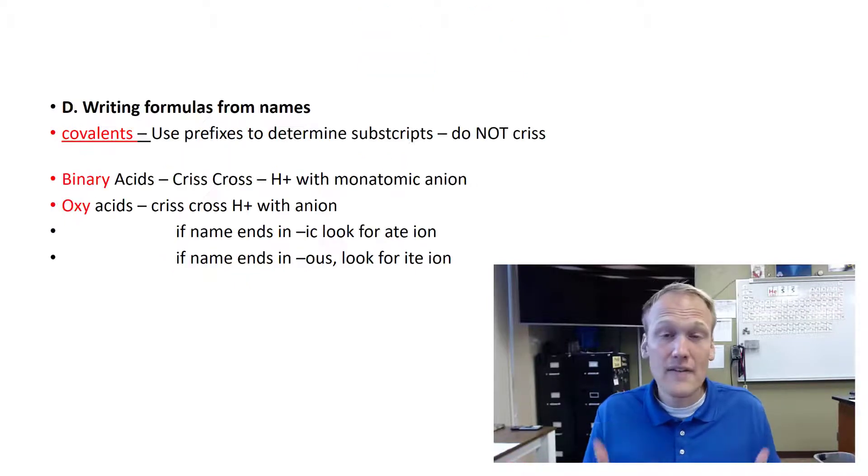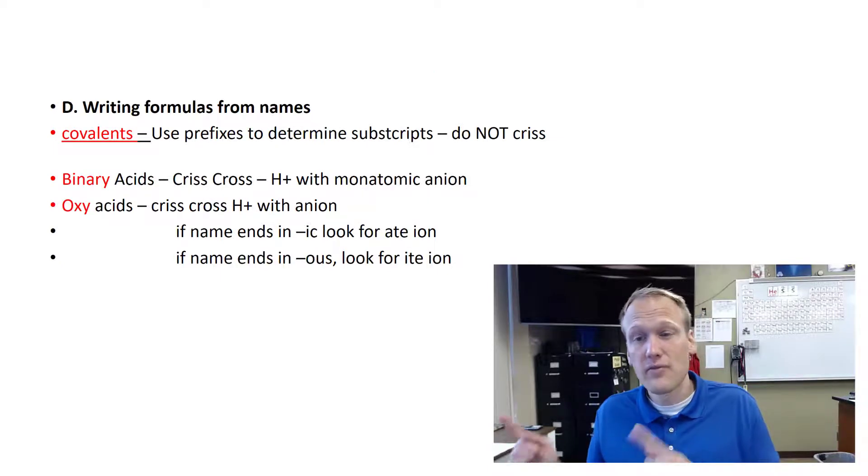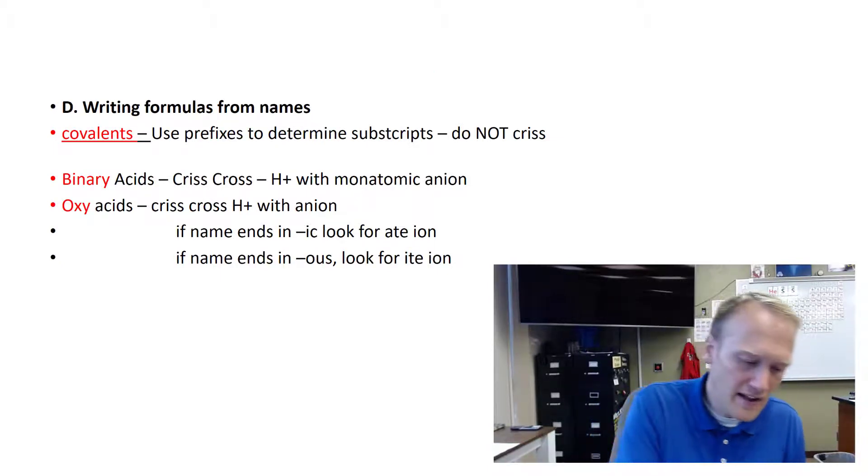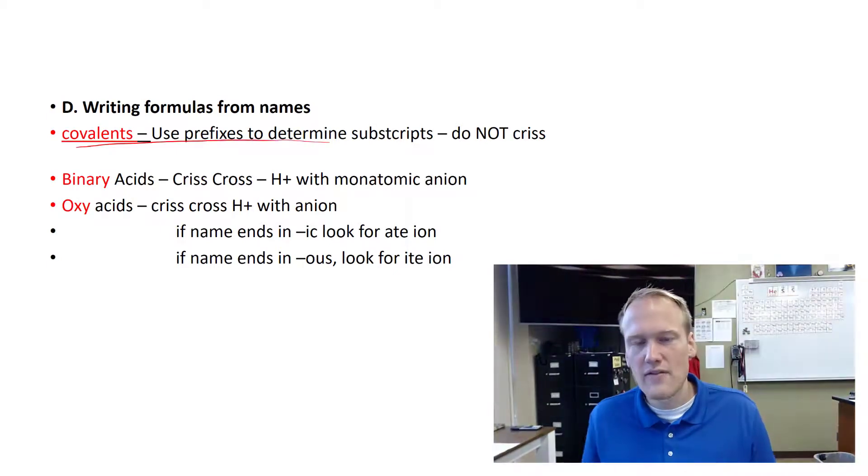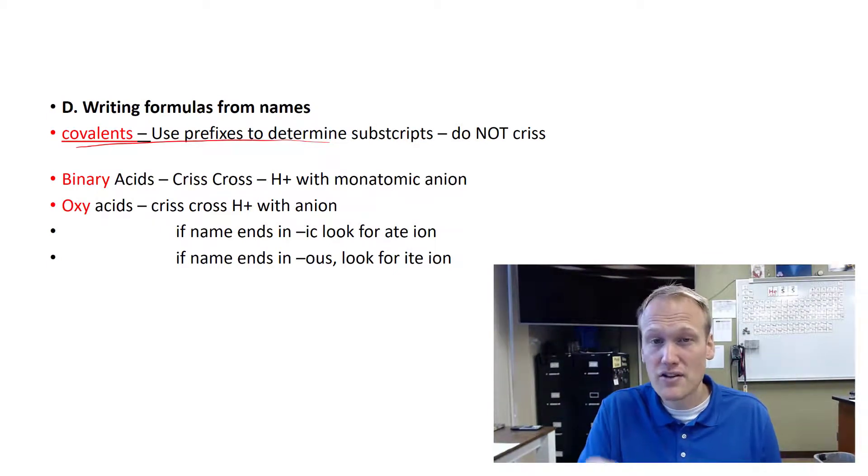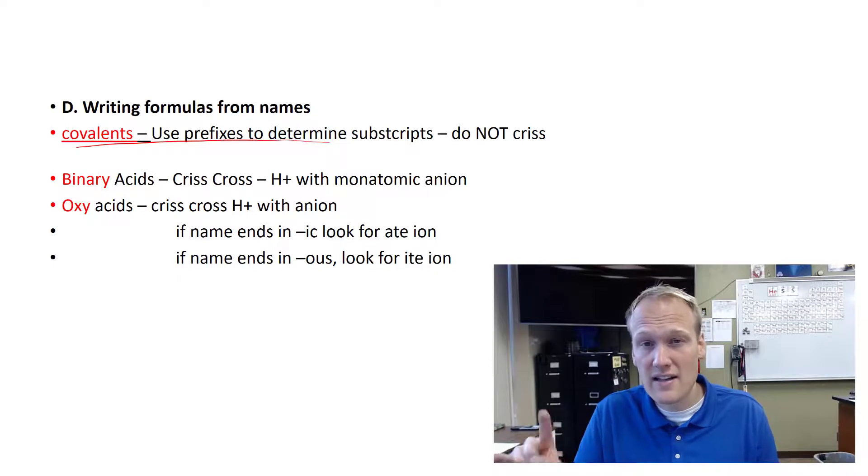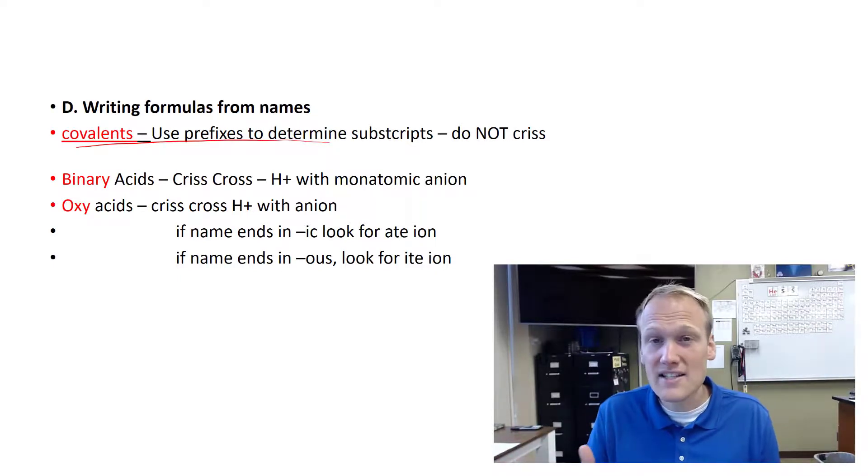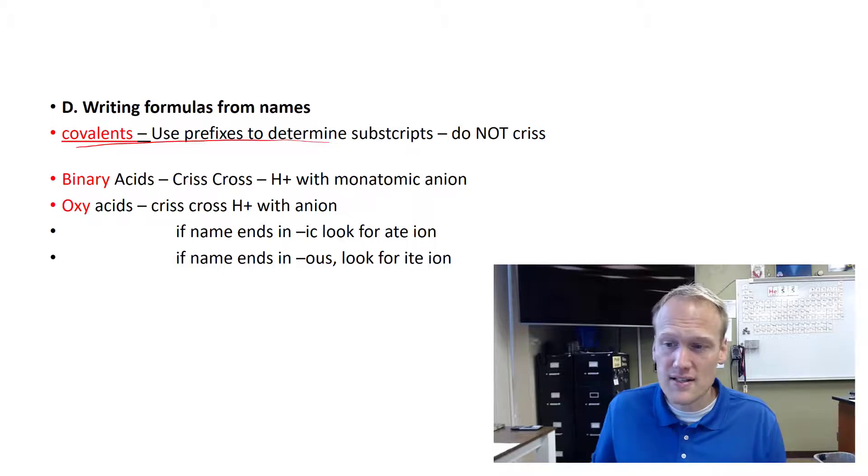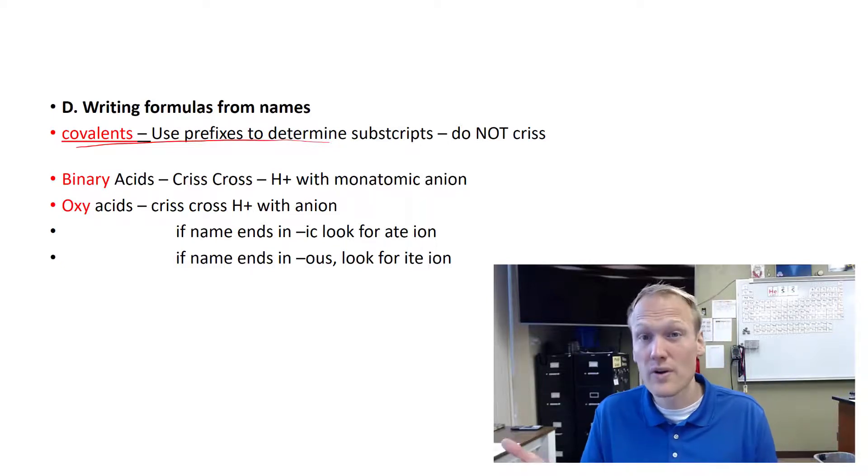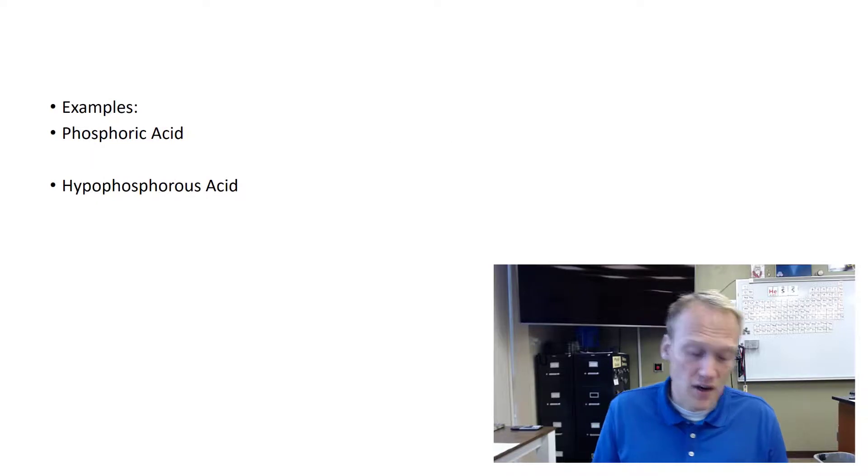So if you're given the names and you need to write the formulas, the covalent ones are the only ones that we don't need to crisscross. If you have a name of a covalent compound, you're going to have the prefixes there that's going to tell you how many of each element you need. With acids, when you're given a name, you're going to identify the polyatomic and you're going to crisscross an H^+1 ion with whatever charge the anion is.